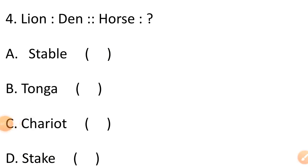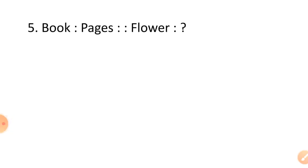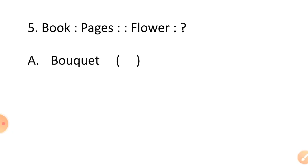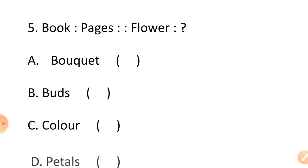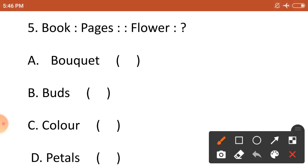Question number 5: book is related to pages. So flower is related to — option A bucket, option B buds, option C colors, and option D petals. A book contains pages. Similarly, a flower contains petals. So our correct option is option D, petals.